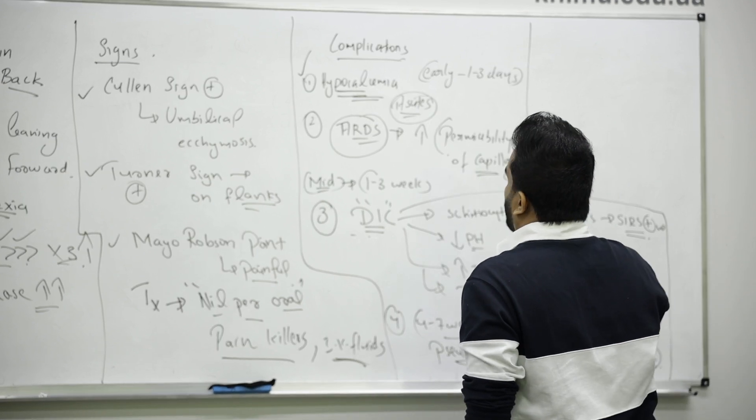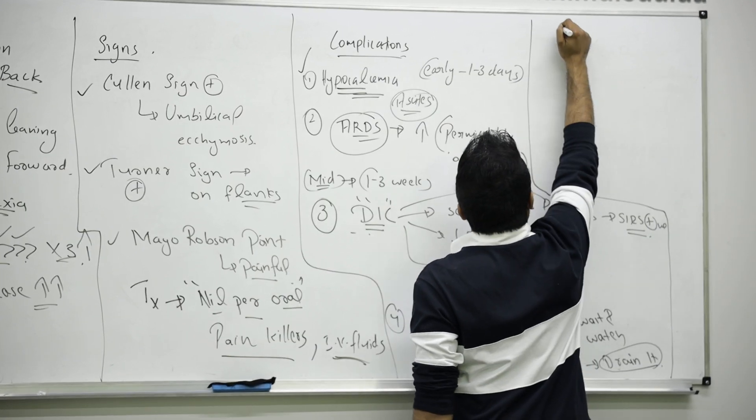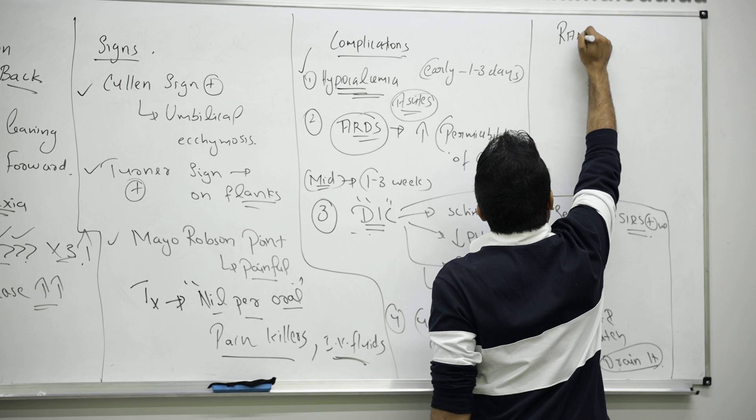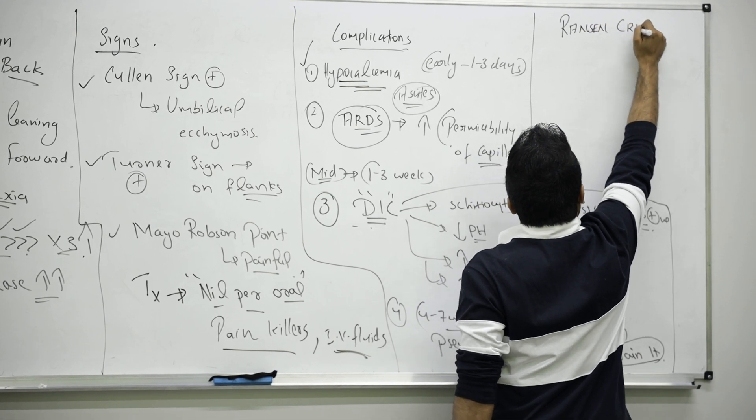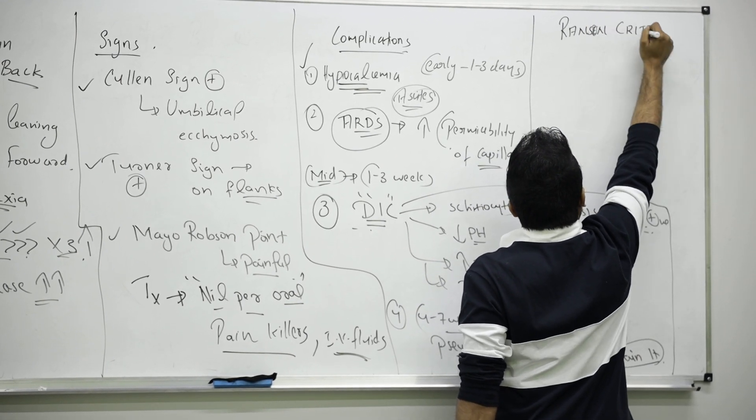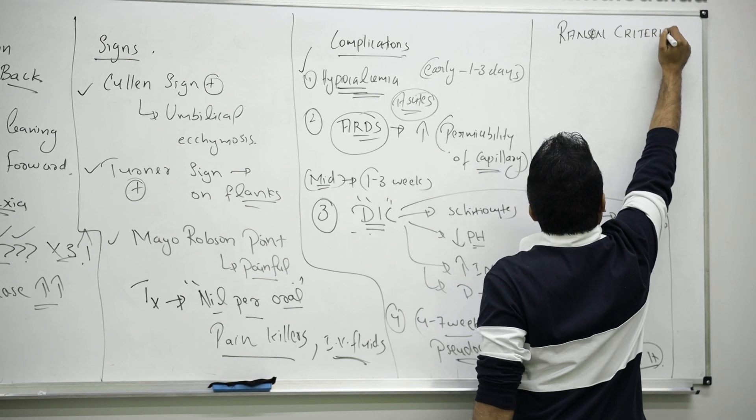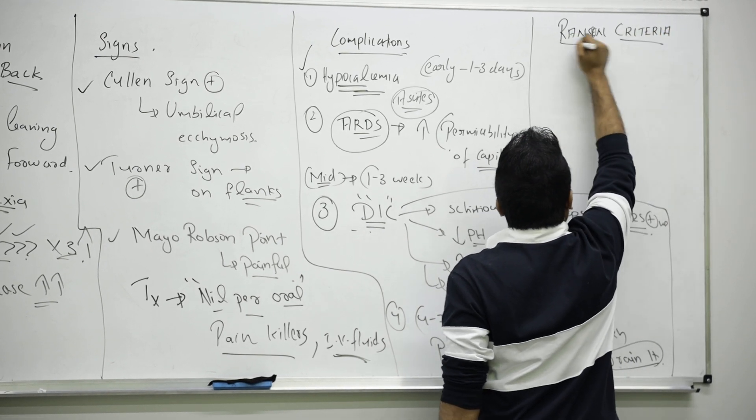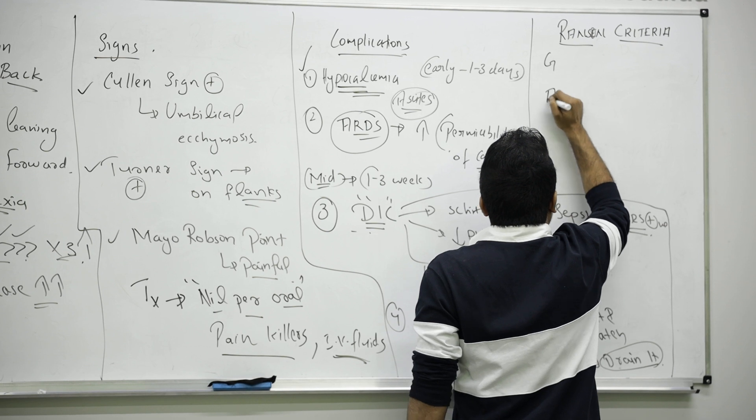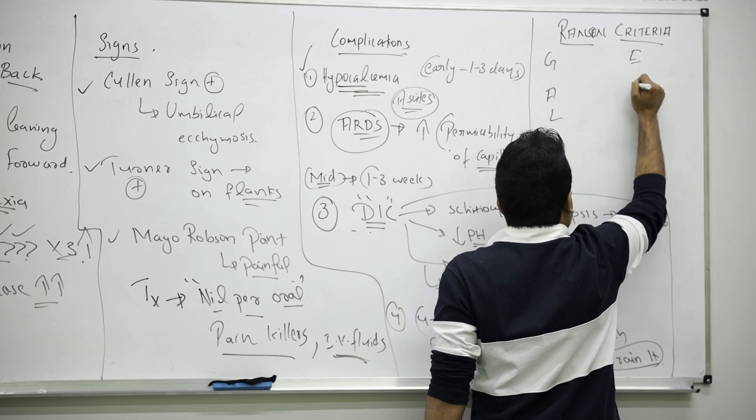Now how we understand how complicated is the pancreatitis, we have a criteria called Ranson's criteria. Remember the mnemonics here: gallstone and ETOH.